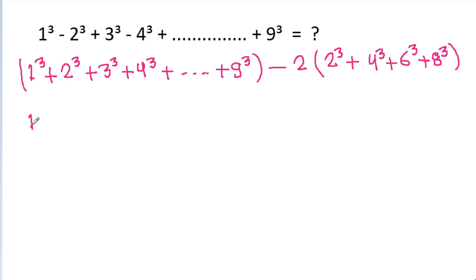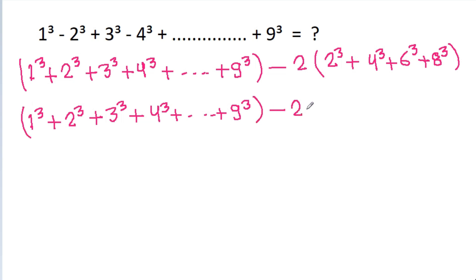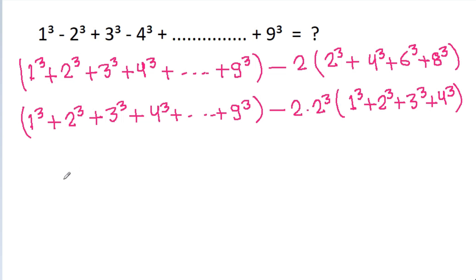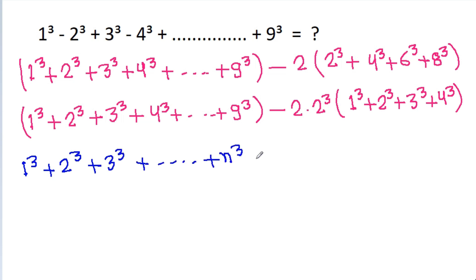It is 1 cube plus 2 cube plus 3 cube plus 4 cube up to 9 cube, minus 2 times — and if we take 2 cube common, we get 1 cube plus 2 cube plus 3 cube plus 4 cube. We know that 1 cube plus 2 cube plus 3 cube up to n cube is equal to n times (n plus 1) by 2, whole square.